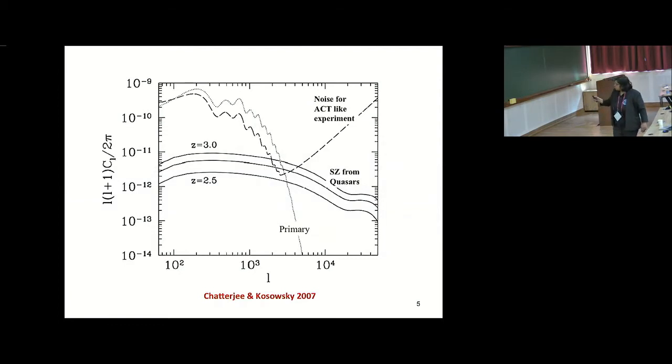The peak in the power spectrum is typically the scale of the bubble of the outflow that's going out.